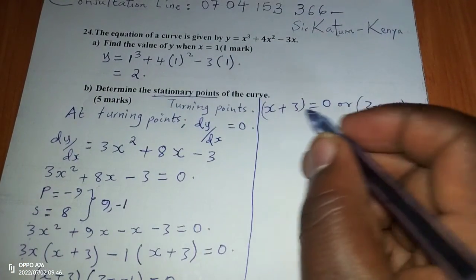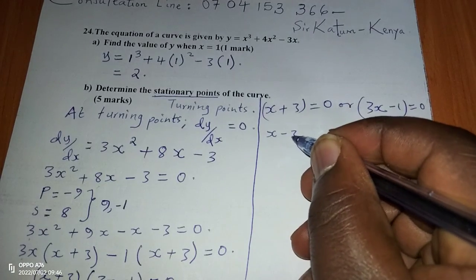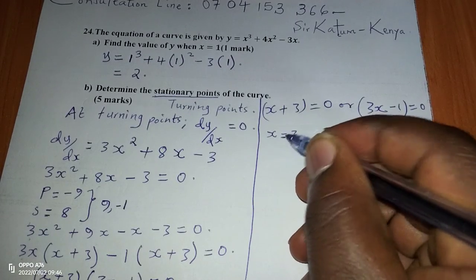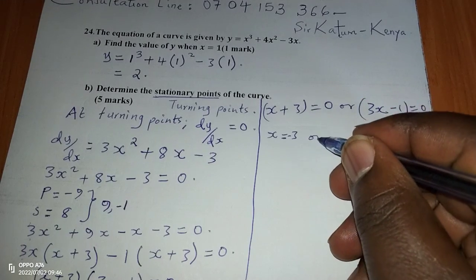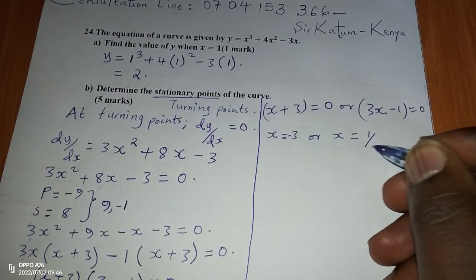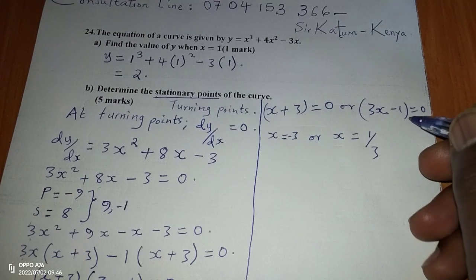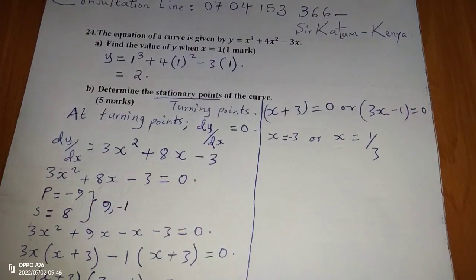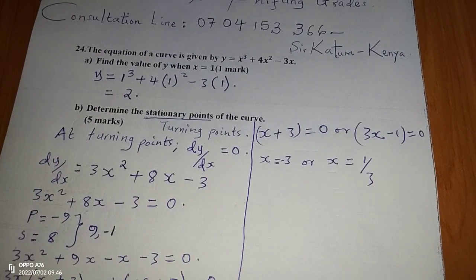Each factor is equated to 0 separately: x plus 3 equals 0 gives x equals negative 3; and 3x minus 1 equals 0 gives x equals one-third. So these are the two x-values at the stationary points.